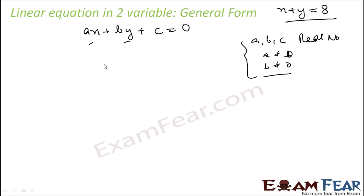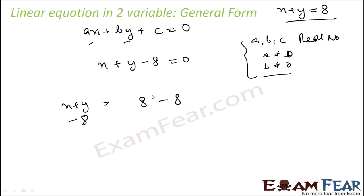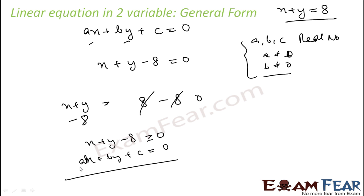For example, take x plus y equals 8. Subtract 8 from both sides to make the RHS zero, giving x plus y minus 8 equals 0. Comparing with ax plus by plus c equals 0: a equals 1, b equals 1, and c equals minus 8.